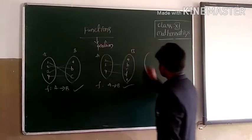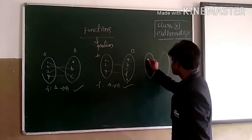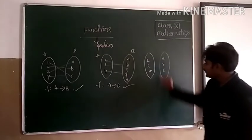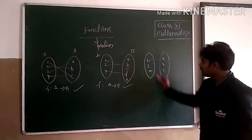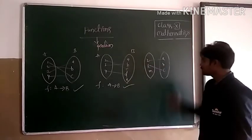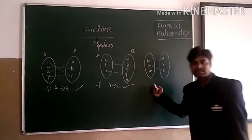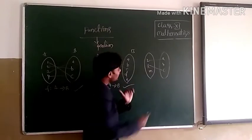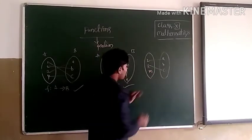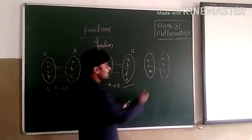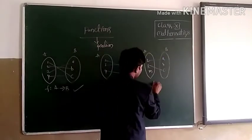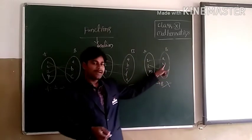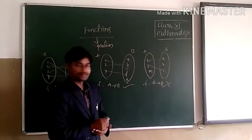One more example. Set A = {K, L, M} and set B = {A, B, C}. Here K is related to A, and L is related to C. But M does not have any image. So this is not a function. The reason is M does not have any image in set B, so f: A → B is not a function.